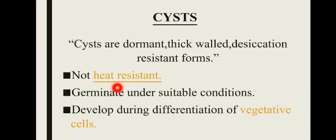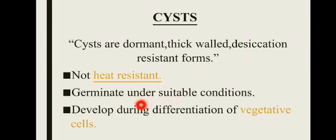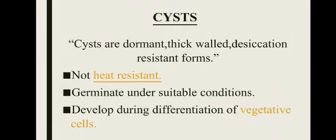پانی کی کمی کو cyst پوری کرتی ہے لیکن یہ heat resistant نہیں ہوتے، کیونکہ ان کی wall میں peptidoglycans زیادہ ہوتی ہیں اور peptidoglycans heat resistant نہیں ہوتی۔ اس لیے یہ bacteria اپنے cell کو heat سے نہیں بچا سکتے۔ Spores اور cyst کا فرق: cyst کی wall thick ہوتی ہے، spores کی thin ہوتی ہے، لیکن دونوں desiccation سے بچاتے ہیں۔ Spores heat resistant ہوتے ہیں لیکن cysts نہیں ہوتے۔ Suitable conditions آنے پر cysts germinate کرتے ہیں اور vegetative growing cells میں differentiation اور growth start ہو جاتی ہے۔